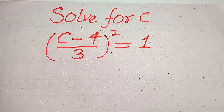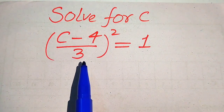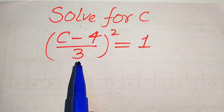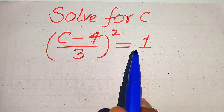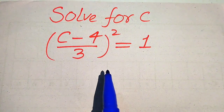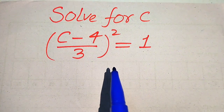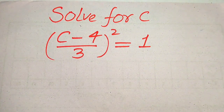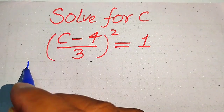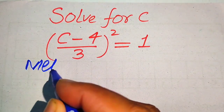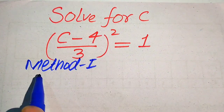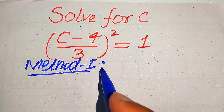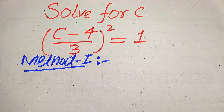Hello everyone. How to solve this problem: find the values of C if we have (C minus 4) divided by 3, whole squared, equals 1. We solve this problem using two methods. I hope you like both of these methods, but if you have any other method in mind, please don't hesitate to write it in the comment section.